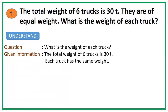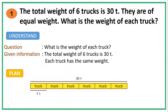Since we already have the given information, we can now plan. In planning, you can also draw an illustration to easily understand what the problem is about. We have six trucks of equal weight, and the total weight of the six trucks is 30 tons. We need to find the weight of each truck — the word 'each' means one. The appropriate mathematical operation for this word problem is division.